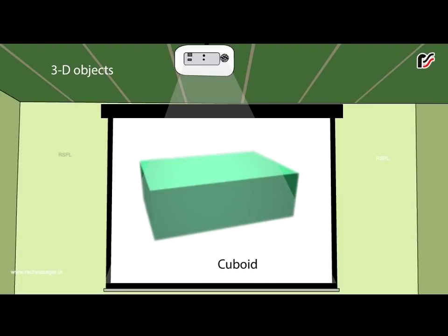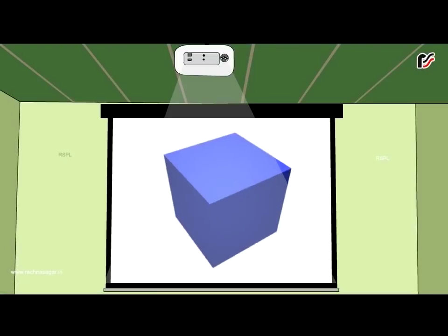This is a cuboid. It has six faces, twelve edges and eight corners. This is a cube. It has six faces, twelve edges and eight corners.